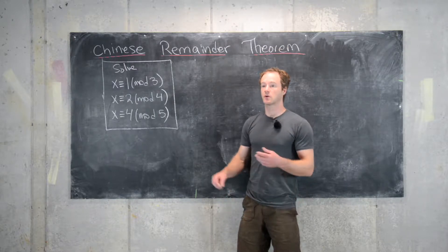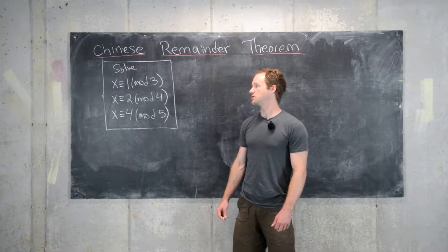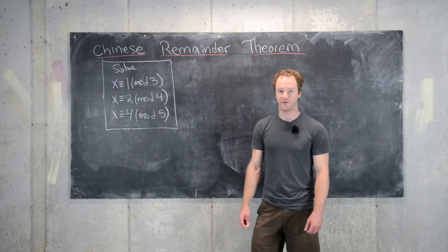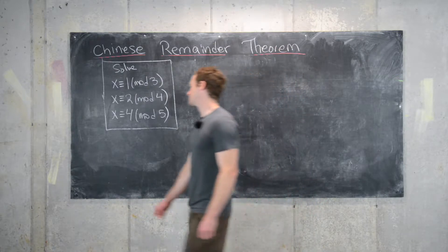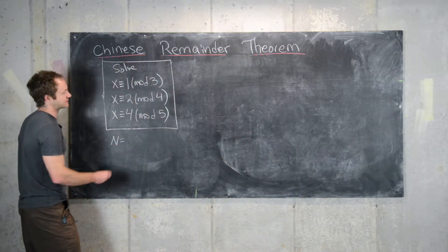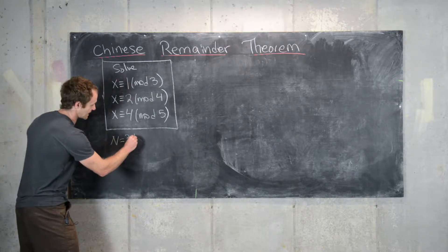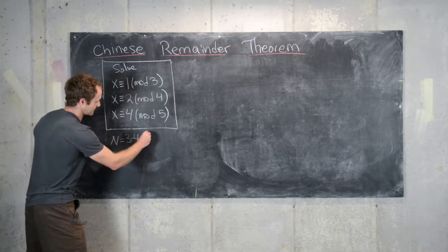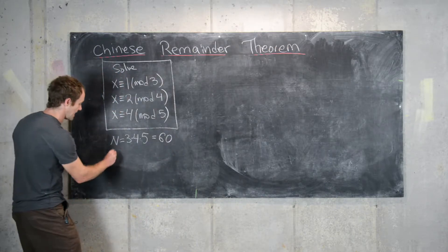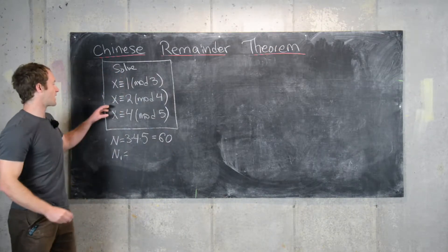Recall that the proof of the Chinese Remainder Theorem is quite constructive, so that gives you an outline of how to find these solutions. The first thing we need to do is set capital N equal to this product: 3 times 4 times 5, so that's 60.